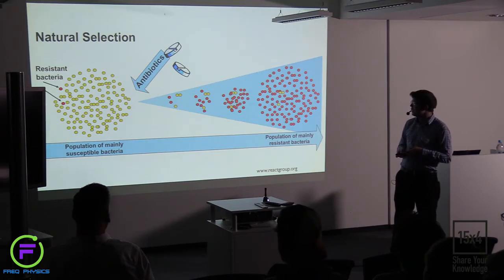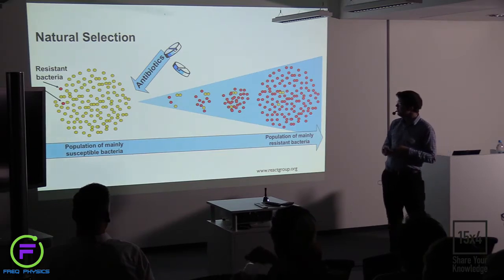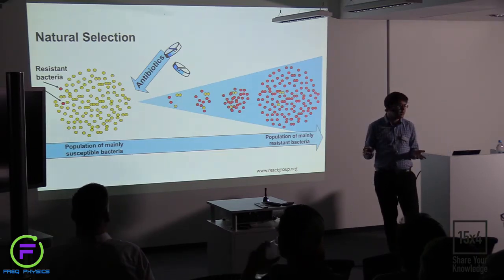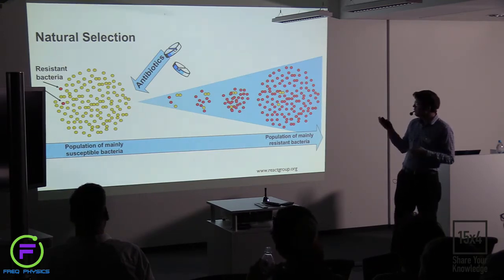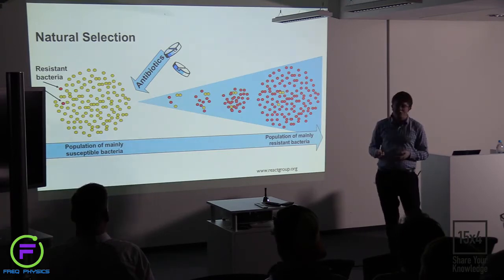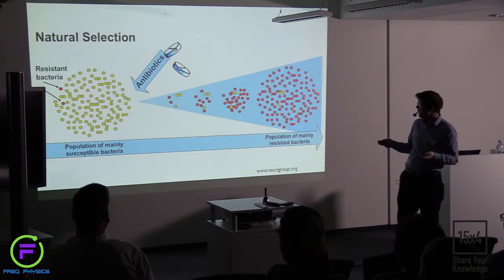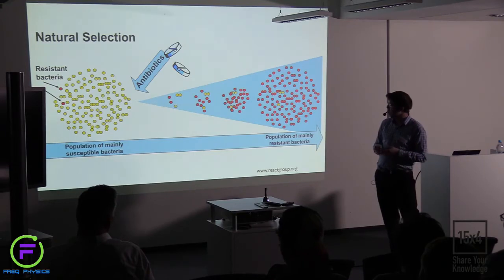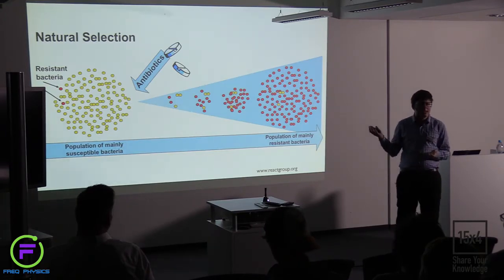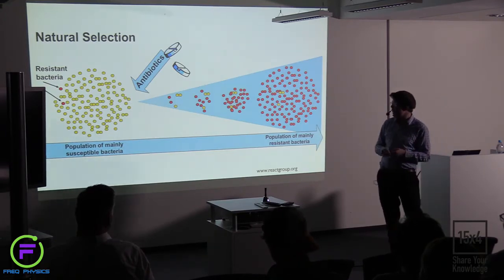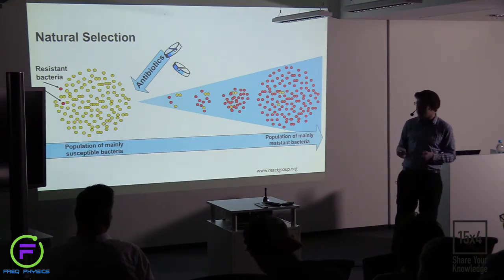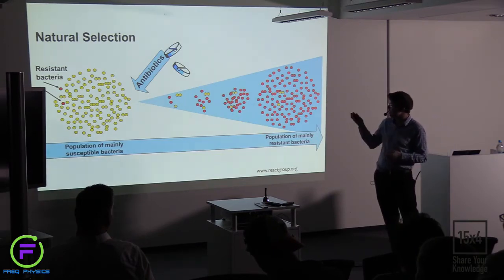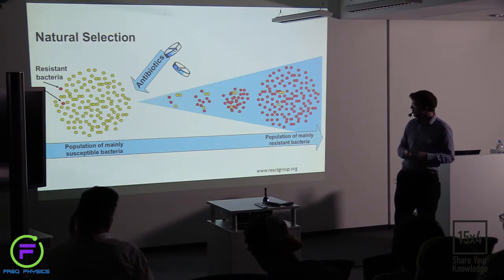Particularly important for us is the study of antibiotic resistance. When we use antibiotics to try and kill bacteria, this changes the population — just as before with the bugs. If we particularly don't use enough antibiotics, some bacteria are still remaining, and those that remain will tend to be more resistant over time. In different circumstances you can get a huge growth in antibiotic resistance.